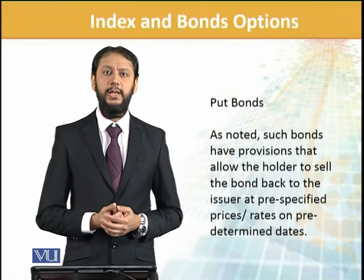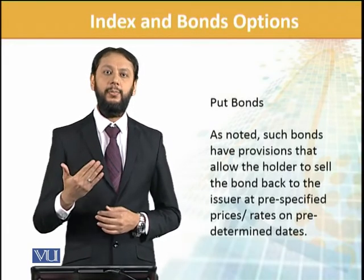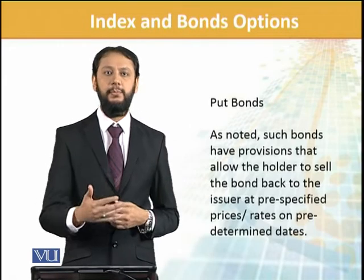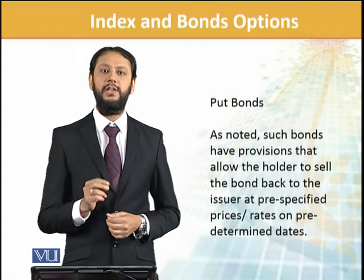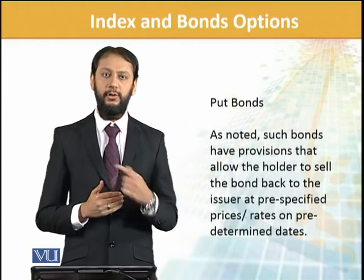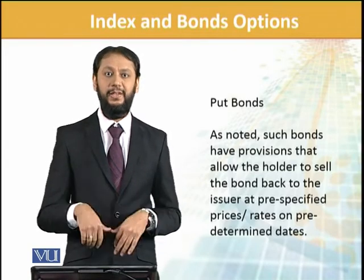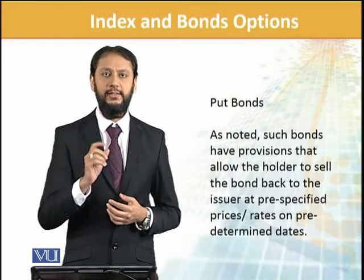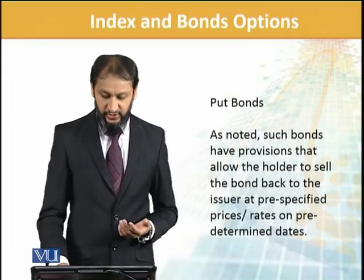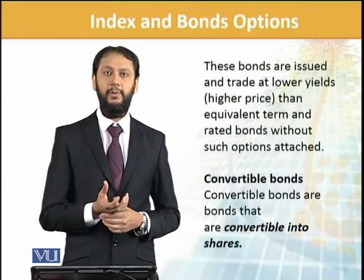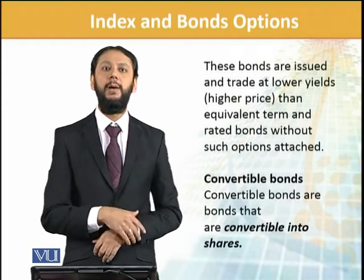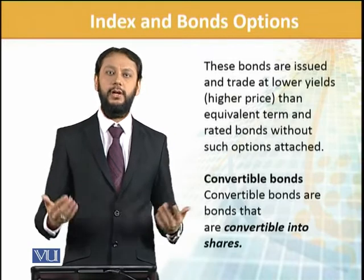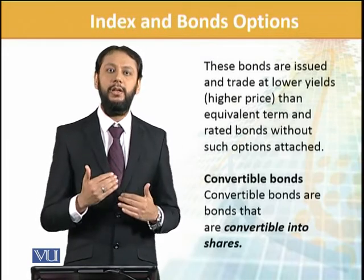In contrast, putable bonds or put bonds give the investor the right. In a normal 20-year bond, the investor must wait until maturity to get their money back from the company. But in a putable bond, the investor has the right to sell the bond back to the company after a certain period — for example, after 10 years they can say 'take this bond back and give me money at rate X.' Since this is an additional feature — both a bond and an option — the investor must pay a premium for it. So a bond normally priced at 1000 may be priced at 1050 or 1100 for the putable version.